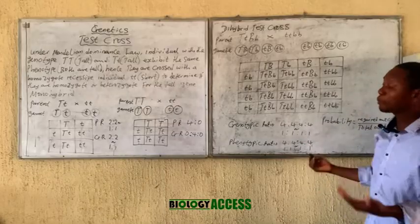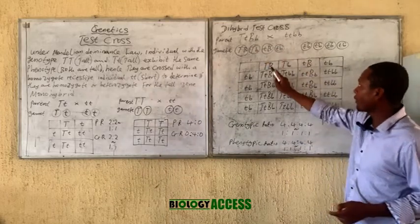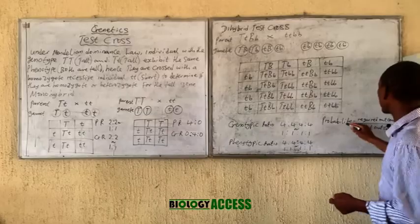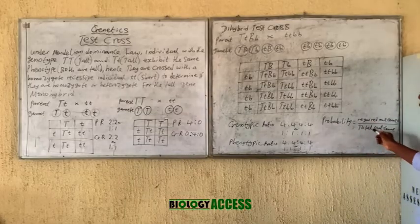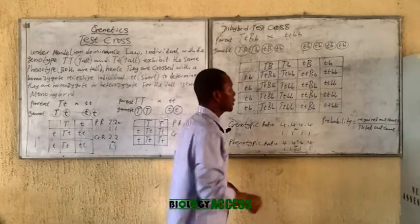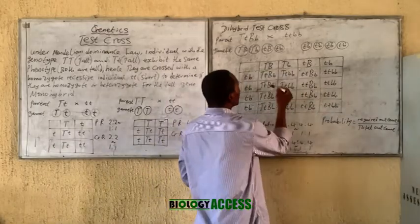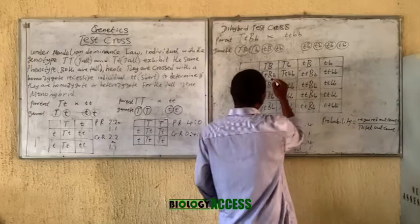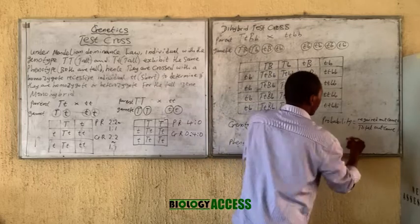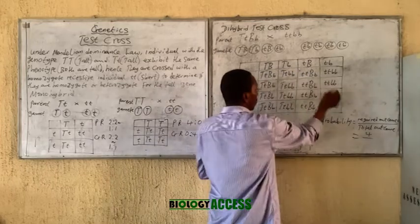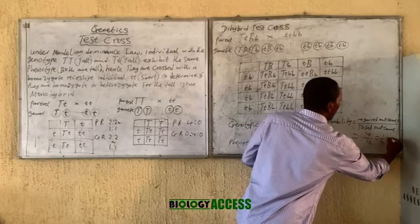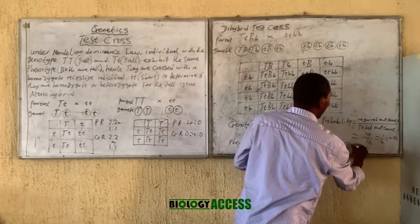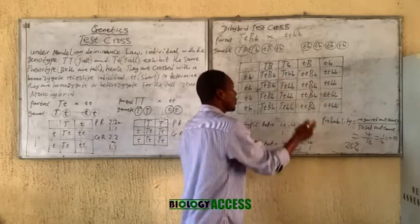If you are asked what is the probability of having an organism that is tall and shrubby or fat when you cross these two plants, the formula for probability is required outcome over total outcome. The required outcome — tall and large in size — appears four times. The total outcome is all 16. So four over 16 gives us one over four, or 0.25, which is 25 percent.